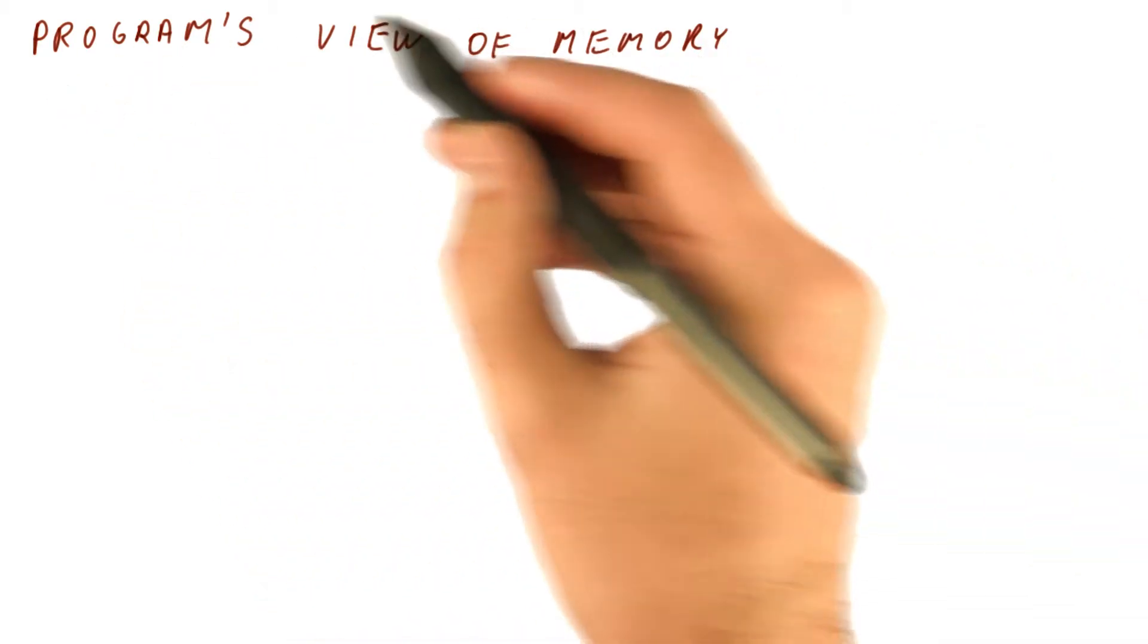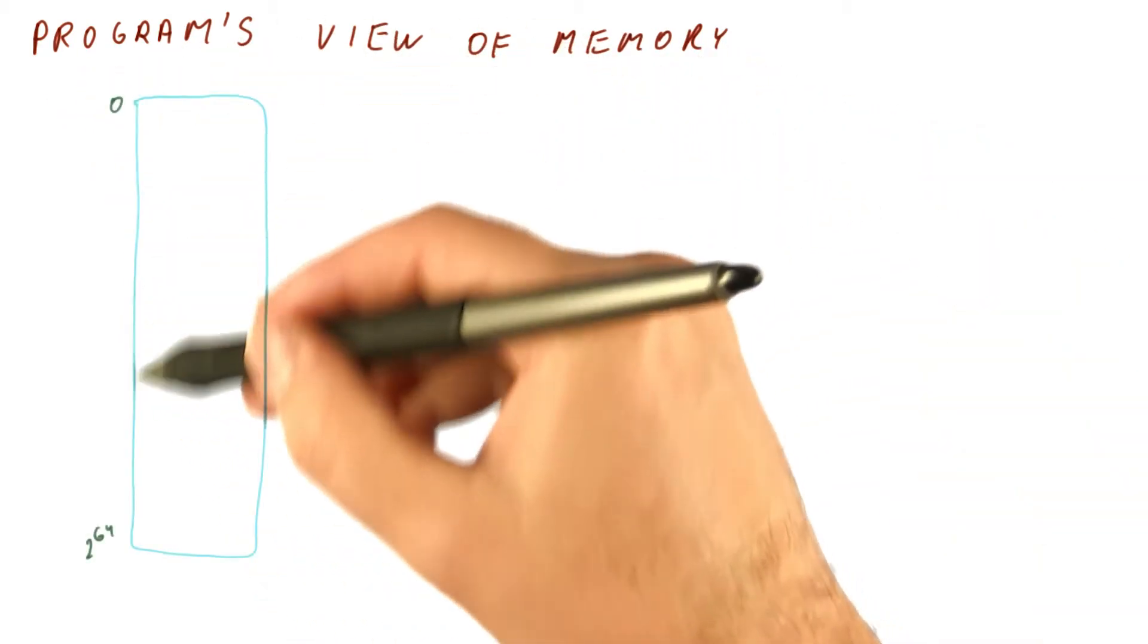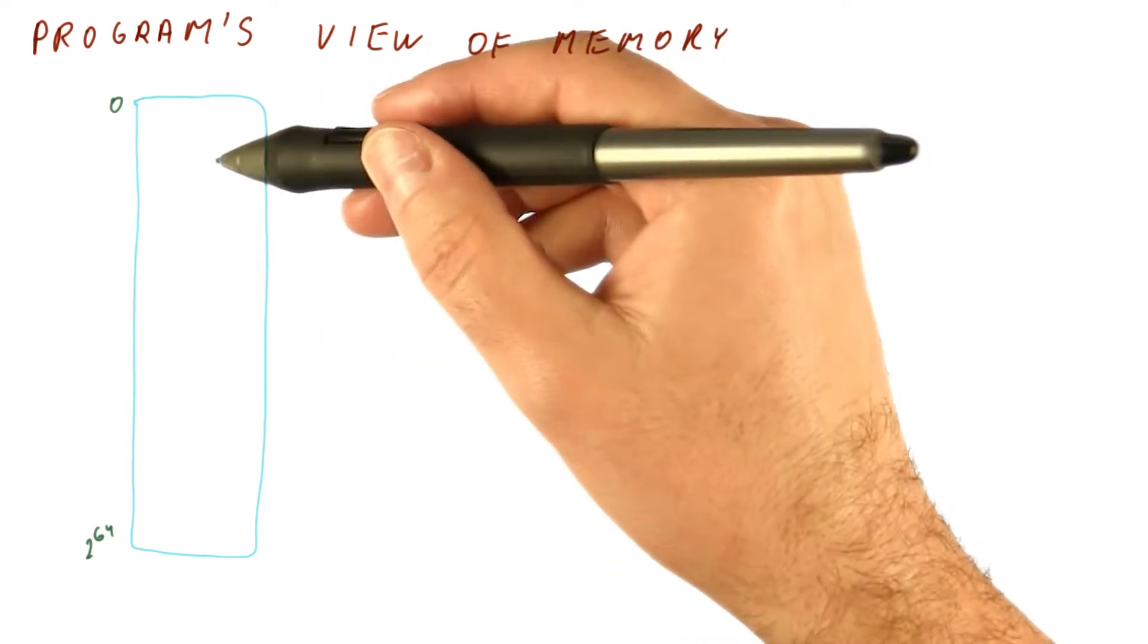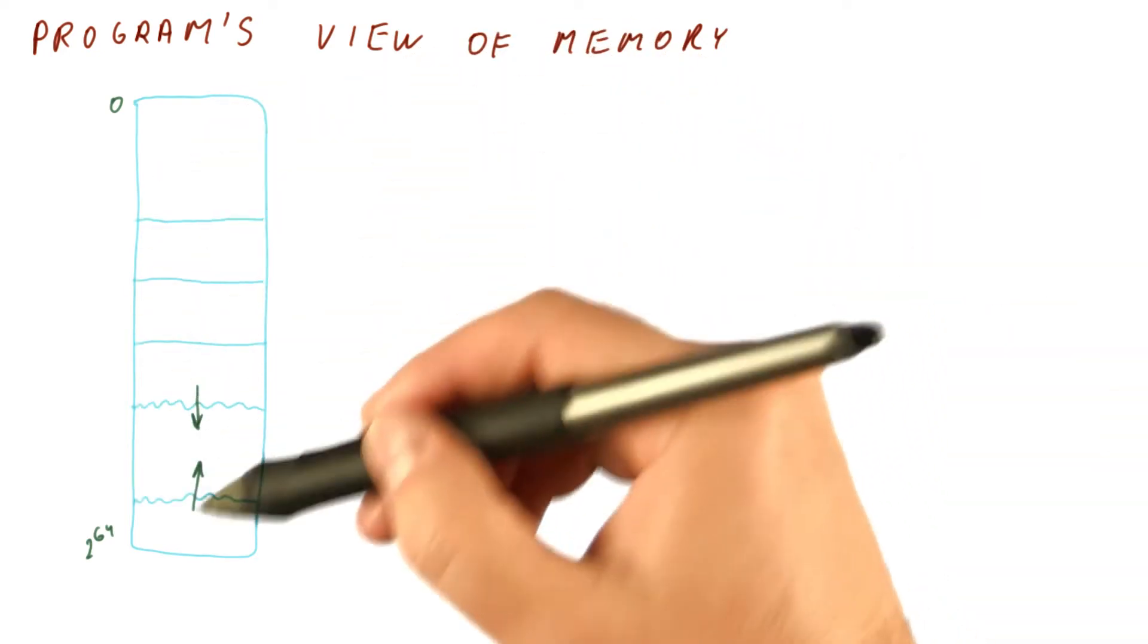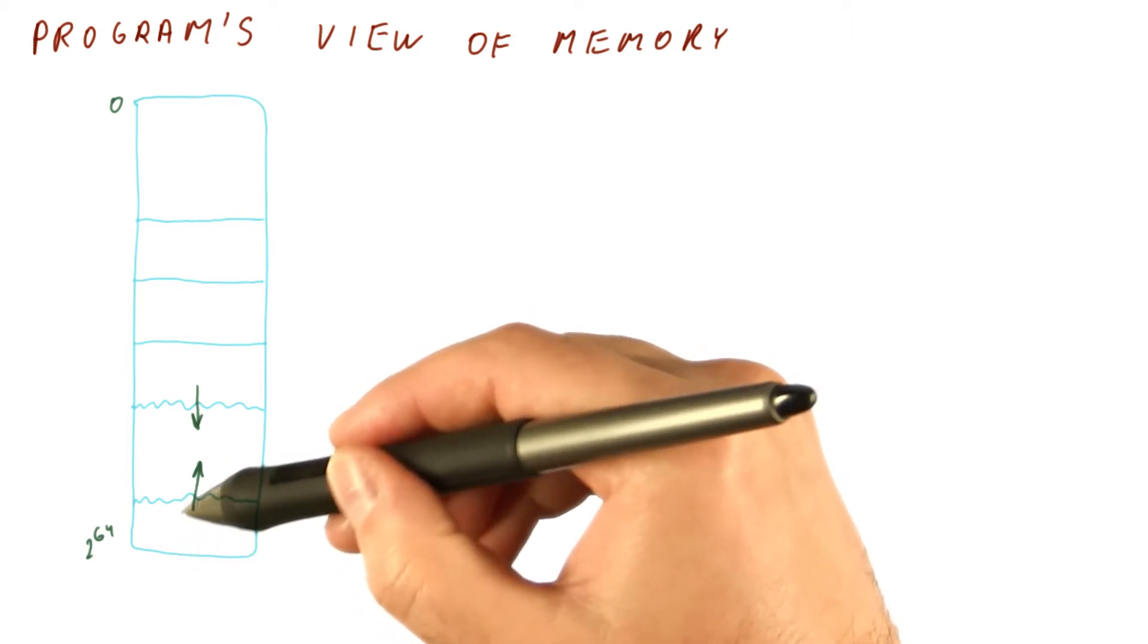Now let's see what the program's view of memory is. The program sees a huge amount of memory, and usually some contiguous regions of this memory are actually used by the program.